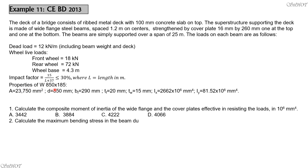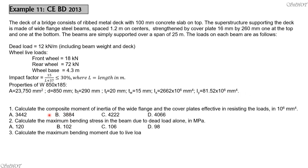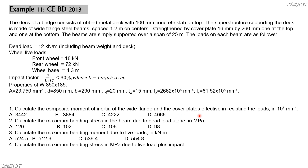These are the properties of the W850 by 185 wide-flanged beam. The first question is to calculate the composite moment of inertia of the wide-flanged beam and the cover plates, expressed in 10 to the 6 mm to the 4. It is equal to the moment of inertia with respect to the x-axis of the beam, plus the transfer moment of inertia of the two cover plates with respect to the neutral axis, which remains the neutral axis by symmetry.